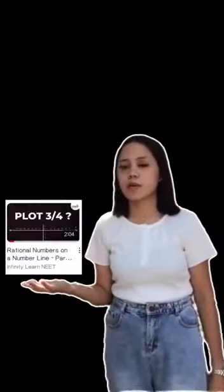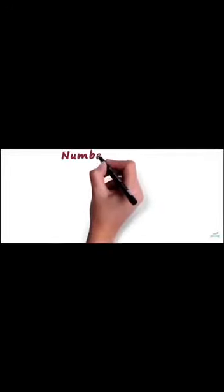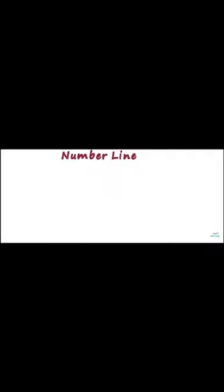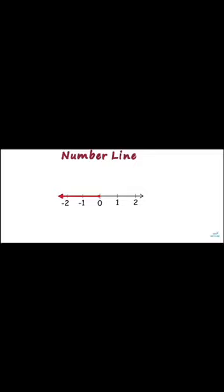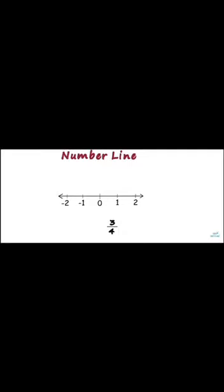Here are some examples of rational numbers on a number line. A number line looks something like this. The positive integers are represented towards the right of 0 and the negative integers are represented to the left of 0. The numbers increase when we move towards the right and decrease when we move towards the left. It's easy to plot integers, but how do we plot numbers like 3 by 4? Before we understand how to plot this, we need to understand a very crucial point.